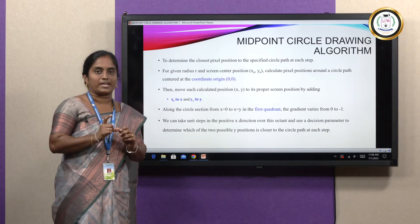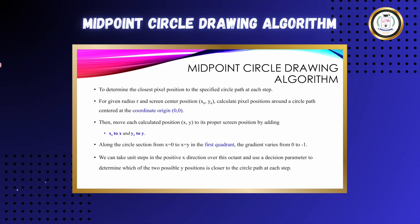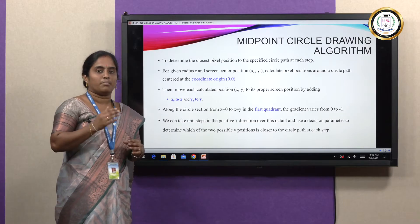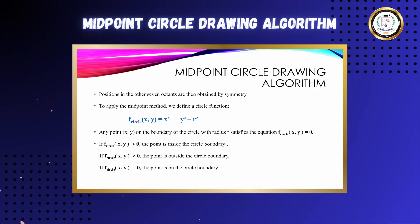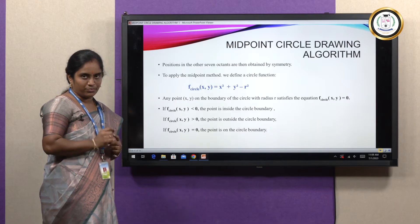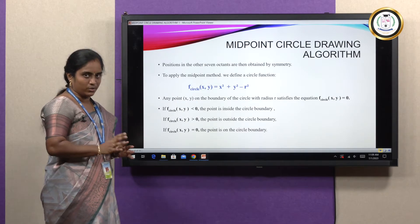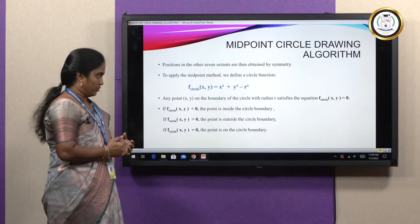We stop the iteration when x equals y, which finishes one octant's coordinates. With those points, we finish the entire circle based on the symmetry property. To accomplish this, we have a circle function f(x, y) = x² + y² − r². When a point lies exactly on the boundary, this equation equals 0. When it is less than 0, the point is inside the circle; when it is greater than 0, the point is outside the circle boundary.